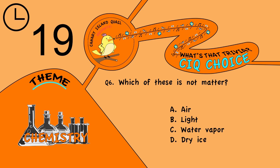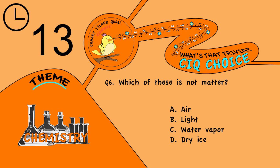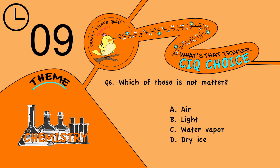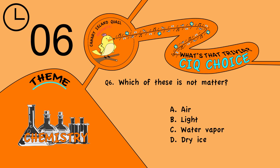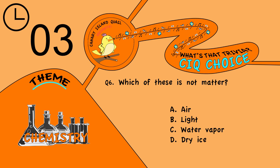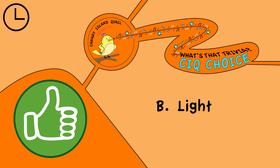Question 6. Which of these is not matter? Is it A, air; B, light; C, water vapor; or D, dry ice? The answer is B, light.